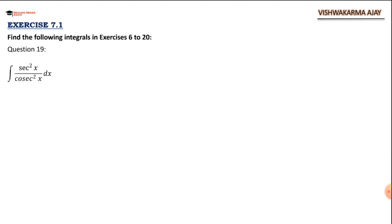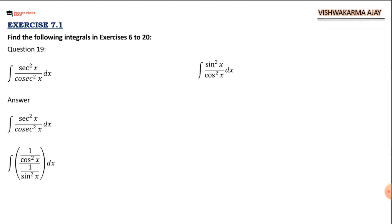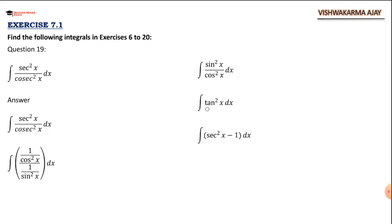Next: integral of sec²x / cosec²x dx. We convert sec and cosec in terms of sine and cosine so that their integrations are directly available. We get sin²x / cos²x = tan²x. Using the trigonometric identity, tan²x = sec²x − 1. So the integral of (sec²x − 1) dx gives tan x − x + c.